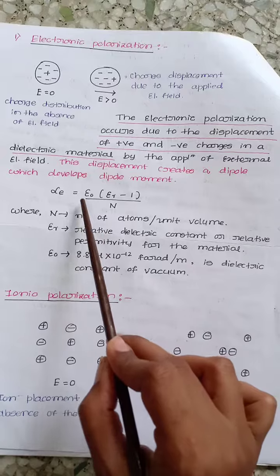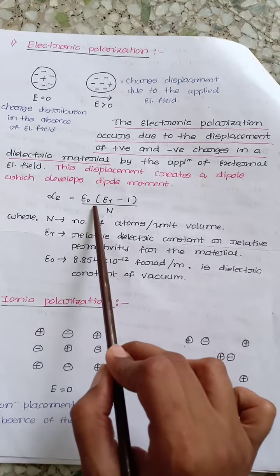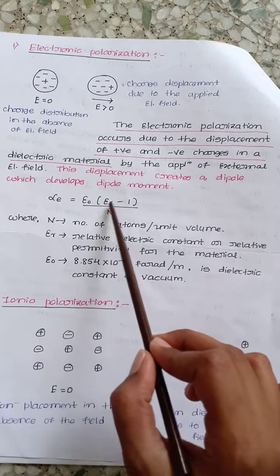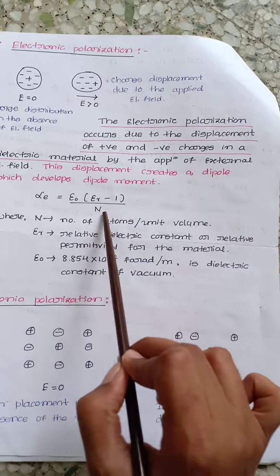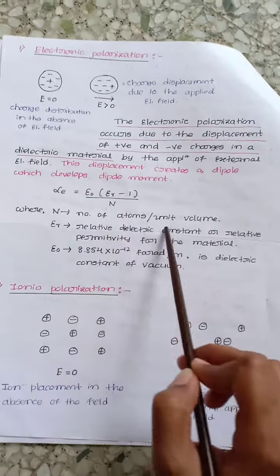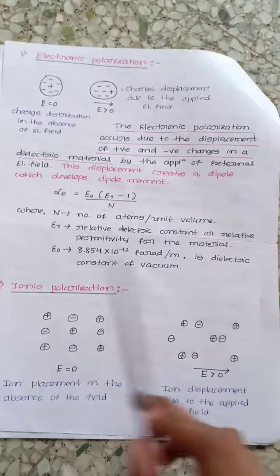Here epsilon 0 is the dielectric constant of vacuum, epsilon r is the relative dielectric constant, and n is the number of atoms per unit volume.